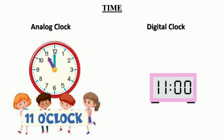Analog clock me, unmein present two hands se time dekhte hai. Jabki digital clock me, unmein present digits ki help se time dekhte hai.